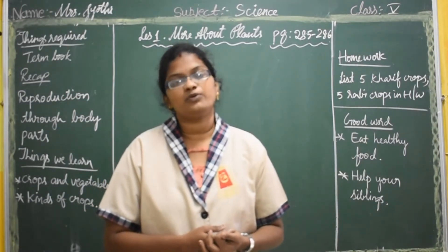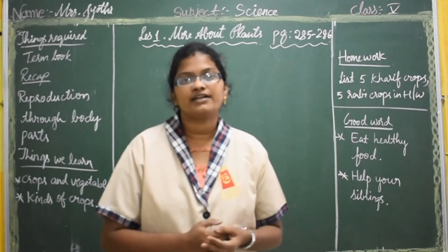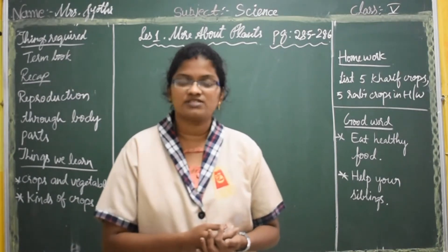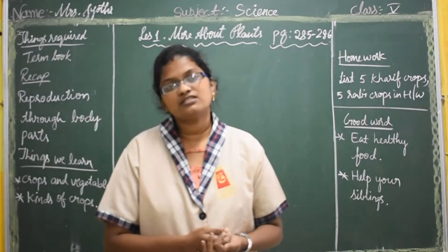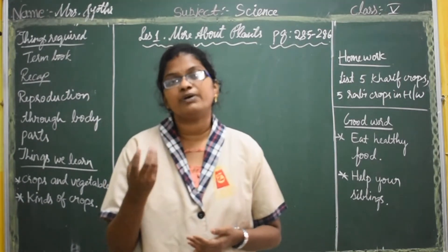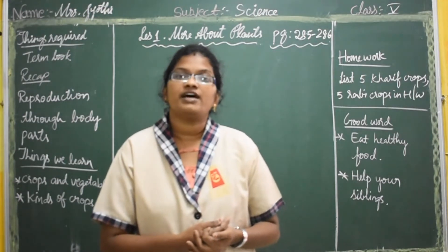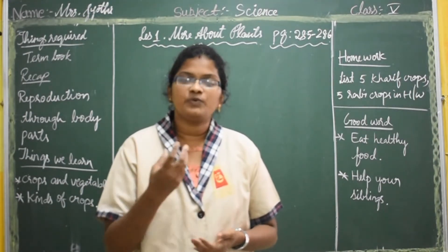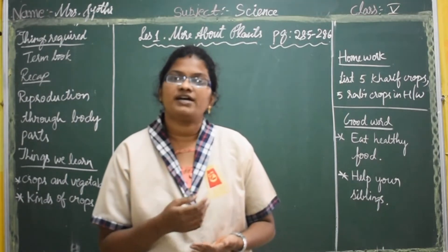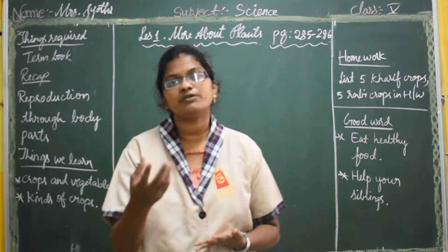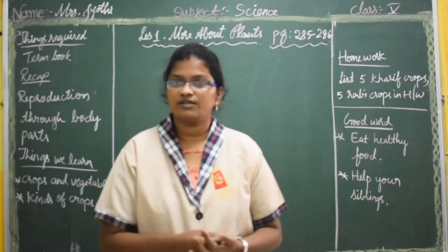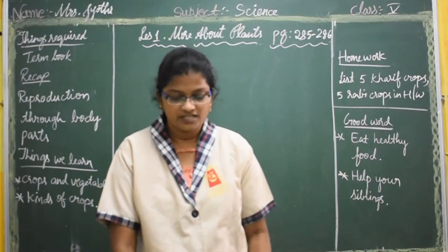The next one is reproduction from roots. The examples are carrot, radish, and sweet potato. Then reproduction through leaves, and the best example is bryophyllum — to the edges of the leaves, the plants make buds which again develop roots. The last one is reproduction through spores, and the examples are moulds, mushrooms, and fern plants. These plants do not have flowers or fruits to reproduce; instead they bear spores and through these spores they reproduce. Today we are going to learn about crops and vegetables.